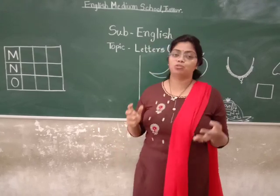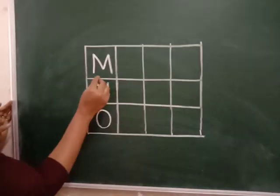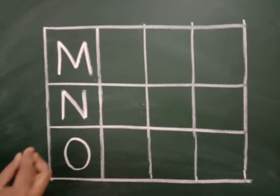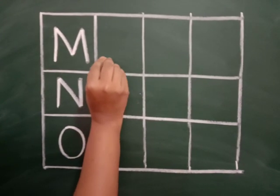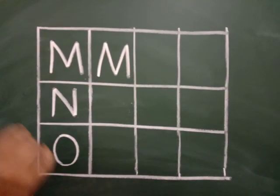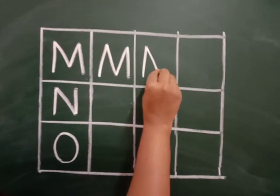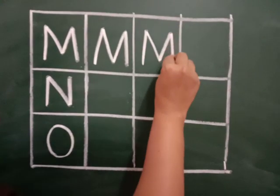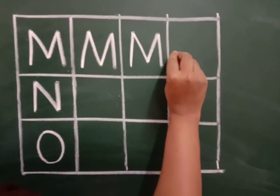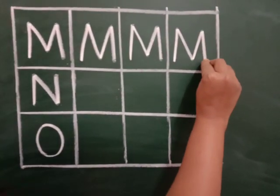So with this sound now I am going to tell you how to write the letters M, N, and O with strokes. Have a look on the board. Identify these letters first — this is M, this is N, and this is O. So how should we write M? Up, down, slanting, again slanting, up and down. M for mango, M for moon, M for monkey also.